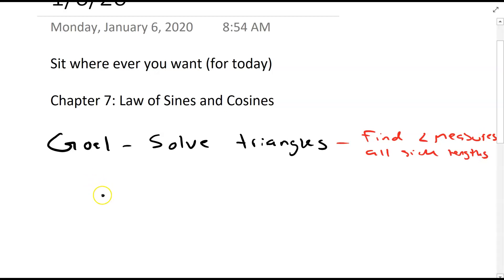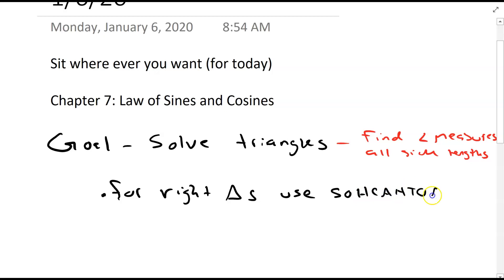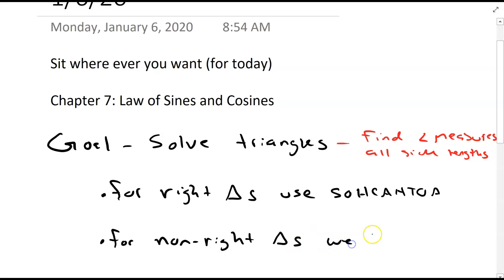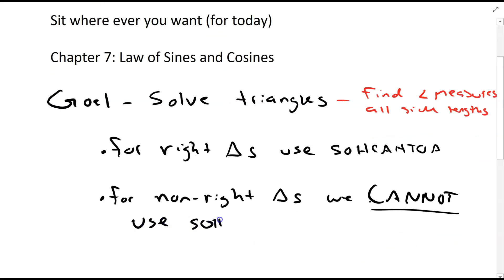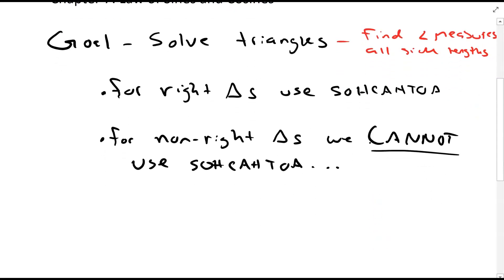For right triangles, this is easy. We've already done this previously in the first semester. We can just use our right triangle definitions of sine, cosine, and tangent and inverses where appropriate. For non-right triangles, we cannot use SOH CAH TOA. We can't use those right triangle definitions of sine, cosine, and tangent. We need something else — that something else is going to be the law of sines and cosines, the tools we use to deal with non-right triangle situations.